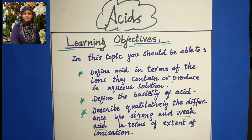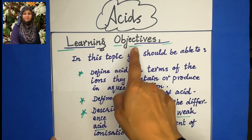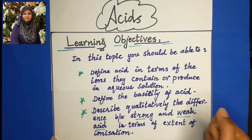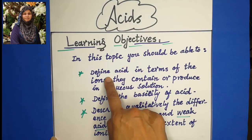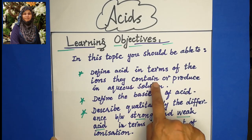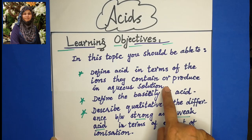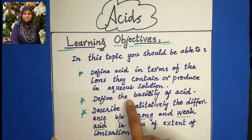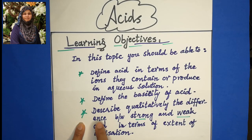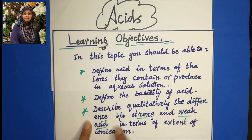Today we are going to learn something about acids. The learning objectives of today's lesson are: first, you should be able to define acid in terms of the ions they contain or produce in a solution; second, define the basicity of acid.